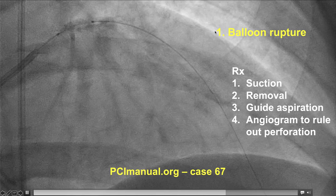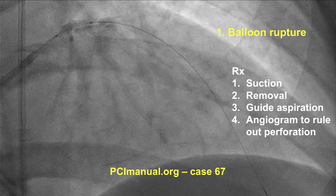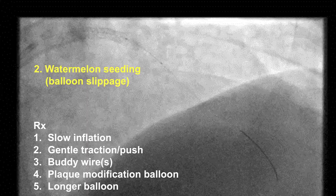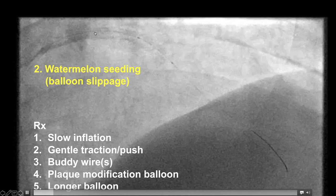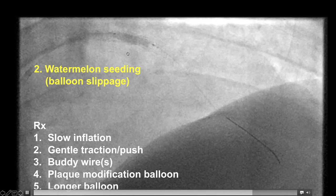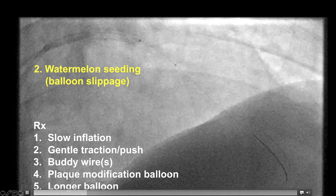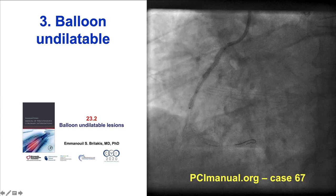What can go wrong during inflation? First, the balloon may rupture. If that happens, suction should be applied immediately, the balloon removed, the guide aspirated, and an angiogram performed, because balloon rupture may lead to vessel perforation, which must be identified and treated quickly. Another potential challenge is the watermelon seeding effect, in which the balloon slips either proximal or distal to the target lesion. Ways to avoid this include slow balloon inflation, gentle traction or push, using one or more buddy wires, using a plaque modification balloon such as the AngioSculpt, Chocolate, or cutting balloon, or using a longer balloon. There is also the possibility that the balloon fails to expand — these balloon undilatable lesions will be discussed in detail in video 23.2.